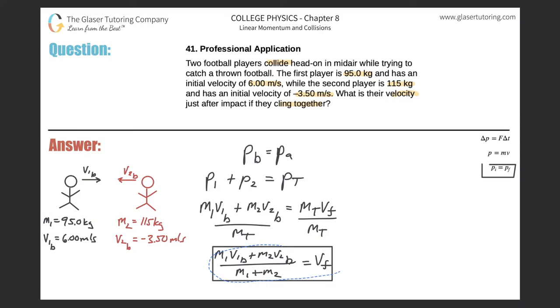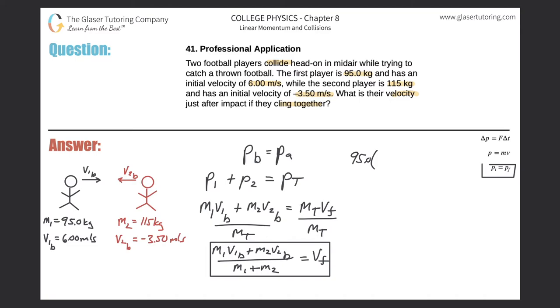So now let me just move this up a little bit. I'm going to put the numbers over here on the right-hand side. So now I'm just going to start plugging in. The mass of the first player was 95 kilograms, so it's 95.0 multiplied by his velocity, which is 6 meters per second.